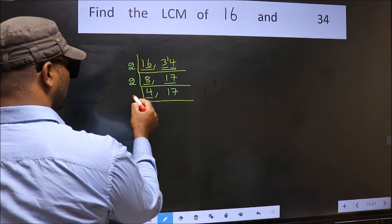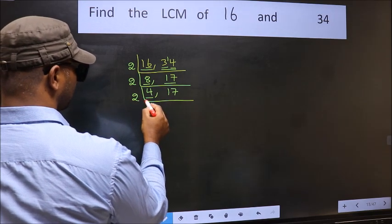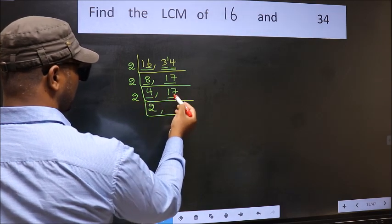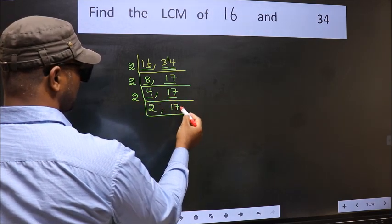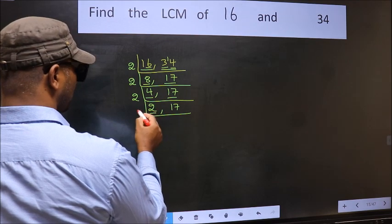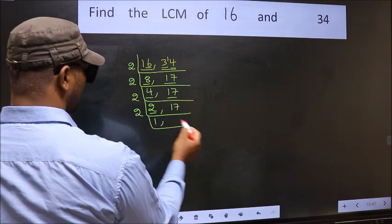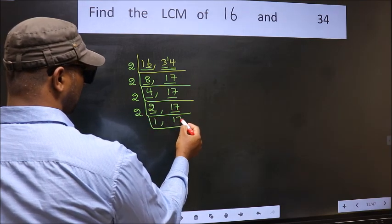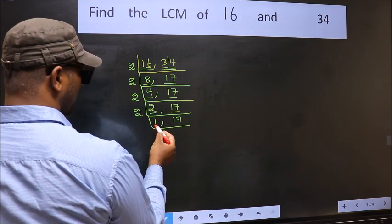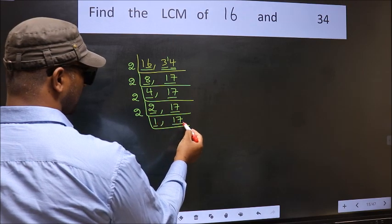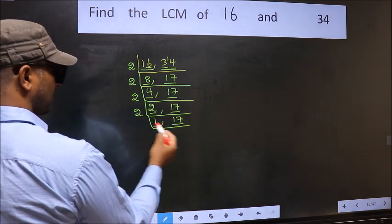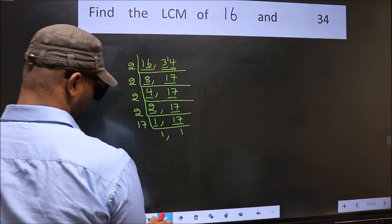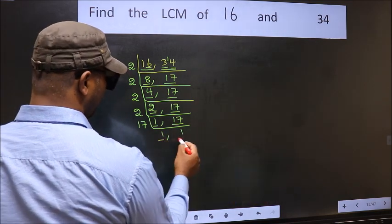Now here we have 4. 4 divided by 2 is 2. The other number 17 is not divisible by 2, so we write it down as it is. Now here we have 2. 2 is a prime number, so 2 divided by 2 is 1. The other number 17 is not divisible by 2, so we write it down as it is. We got 1 here and 1 here, so focus on the other number 17. 17 is a prime number, so 17 once is 17. We got 1 in both places.